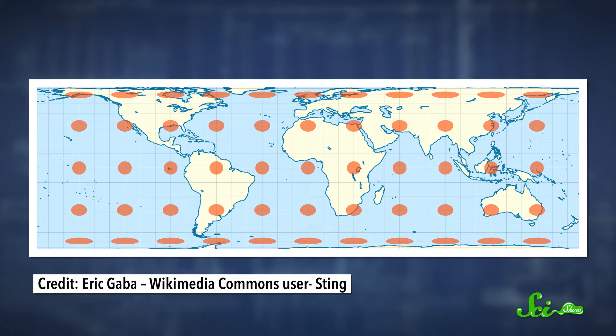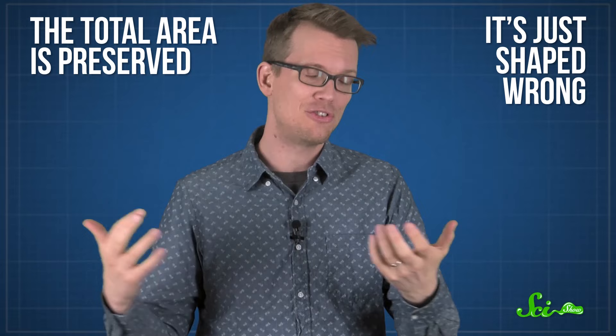But it all works out in the end. The map shrinks in the vertical direction just enough to compensate for the stretching in the horizontal direction. So the total area is actually preserved, and everything is the right size. It's just shaped wrong.